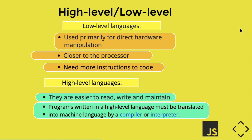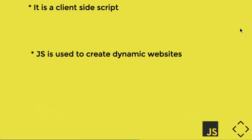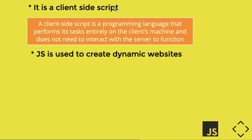So if you use Python or JavaScript, you are using high-level languages. The client-side script is a programming language that performs its tasks entirely on the client's machine and does not need to interact with the server to function.